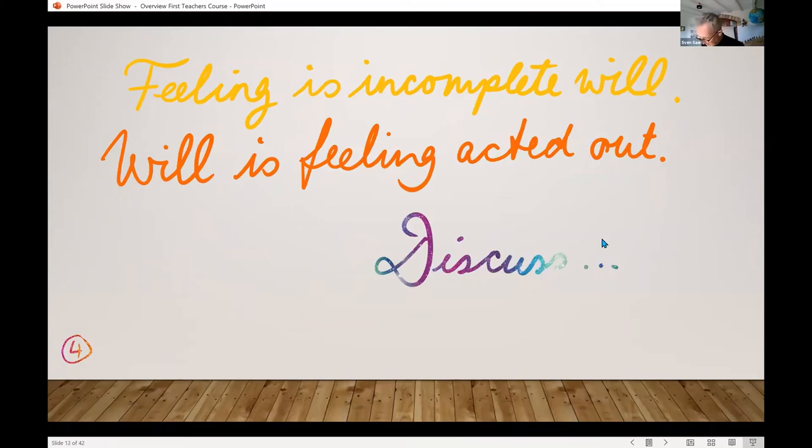In lecture four he moves to this rather provocative statement. He almost gives a definition. He says that feeling is incomplete will and will is feeling acted out. Can I challenge you to think both those thoughts next to each other?